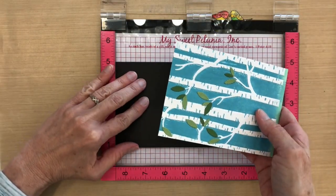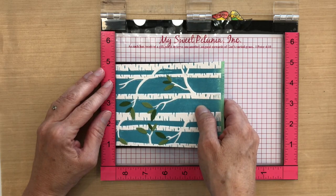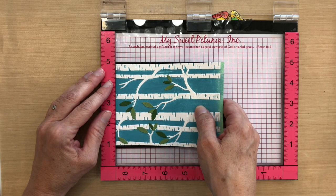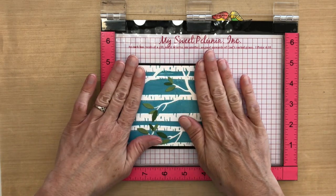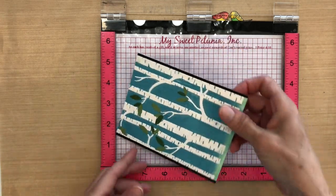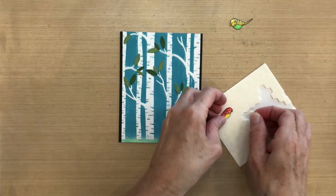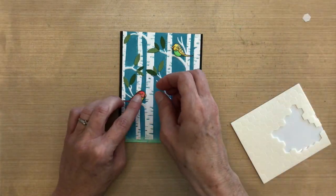I'm going to use the side of my MISTI to line up my pieces so they're straight across and even. Then I have an eighth of an inch of black on either side. One Stampin' Up dimensional fits perfectly on the back of each of these birds, so I'm going to pop them up on the different branches.